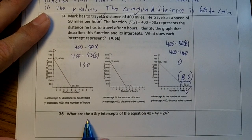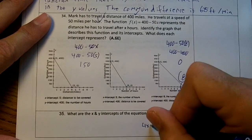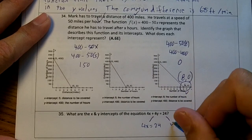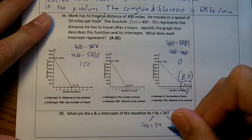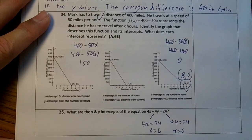And lastly, number 35. What are the x and y-intercepts of this equation? Split your equation up. 4x equals 24, and 4y equals 24. If you divide by 4, you'll get x equals 6 and y equals 6. Those are our intercepts.